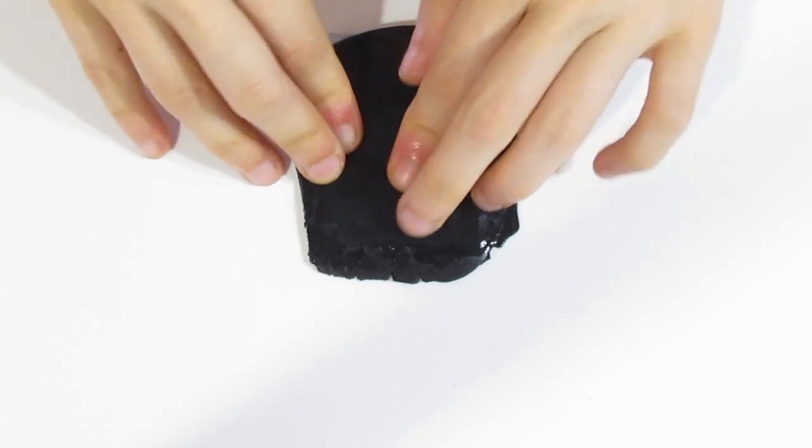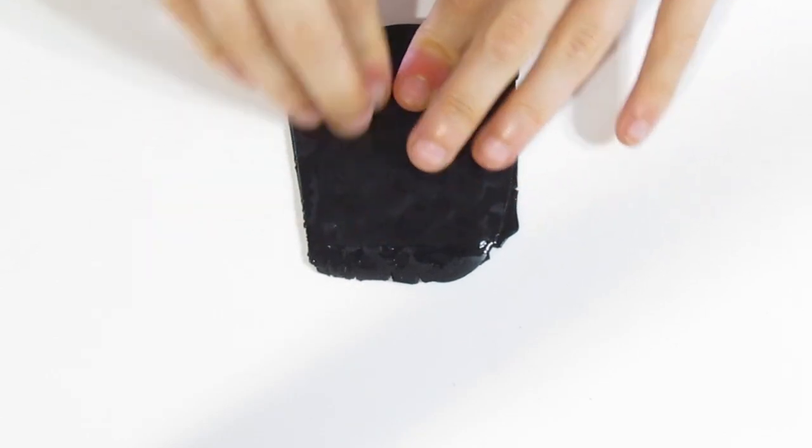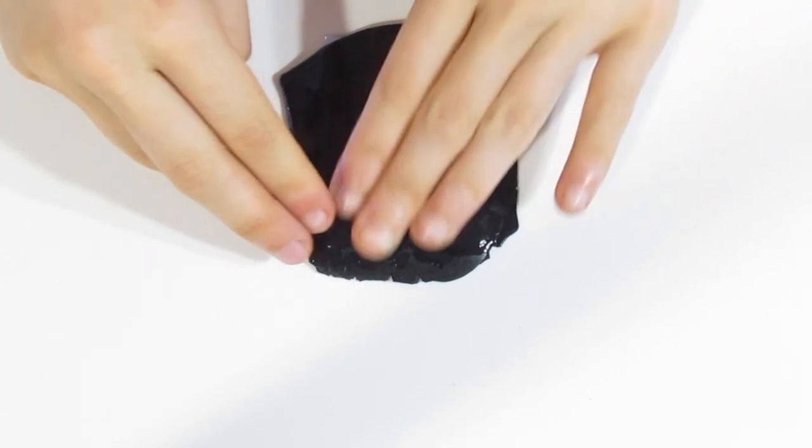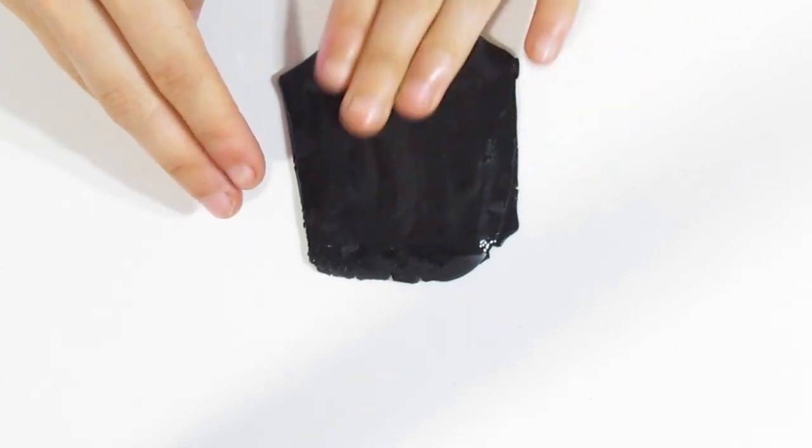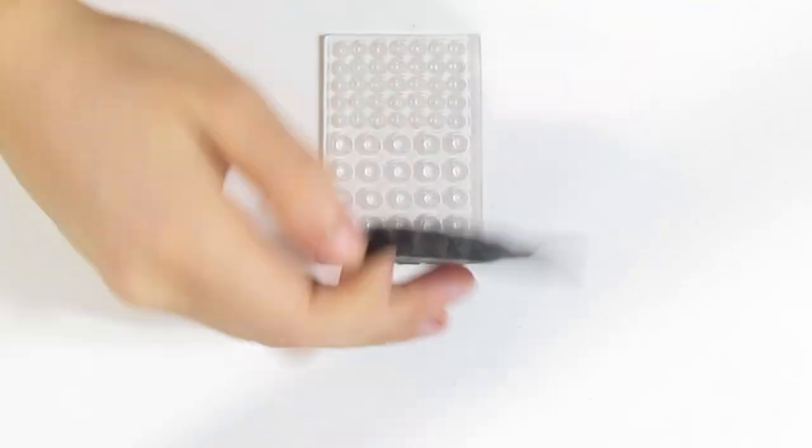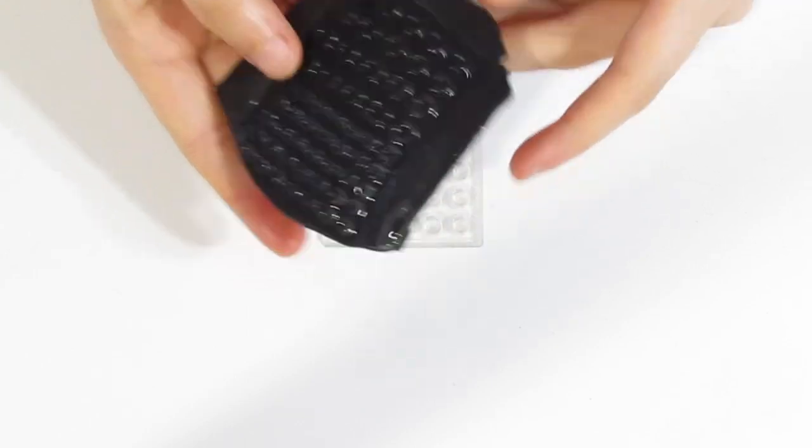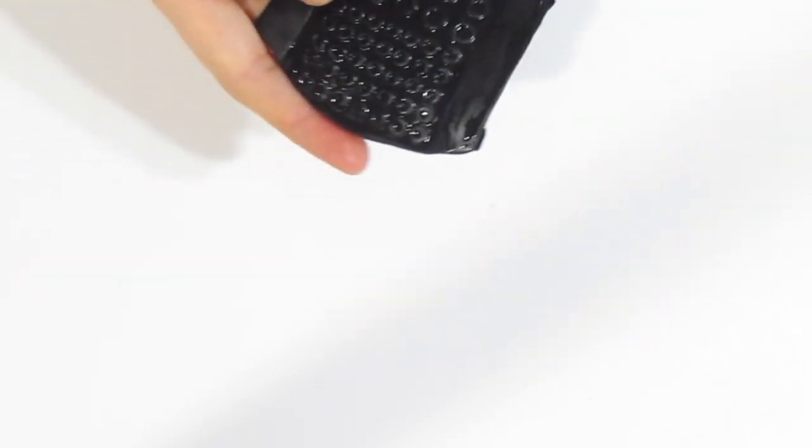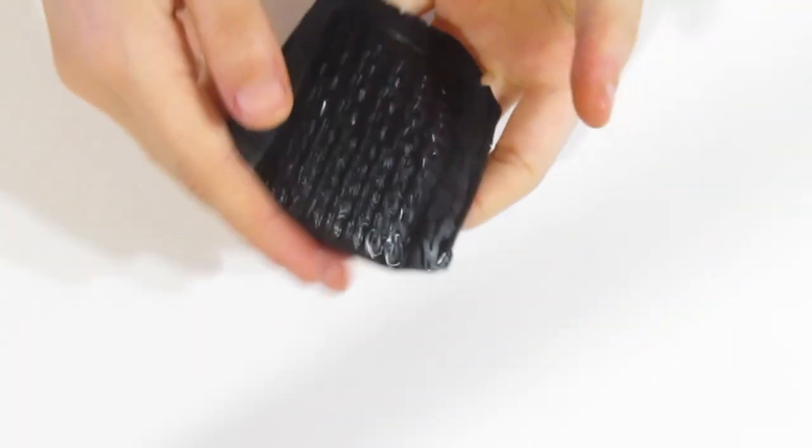And then just make sure that you've got a good impression. Okay, and there we go. Hopefully you can see the pattern there. Put that to the side, allow that to dry. And then you're also going to want to put this to the side in a spot where it can dry.